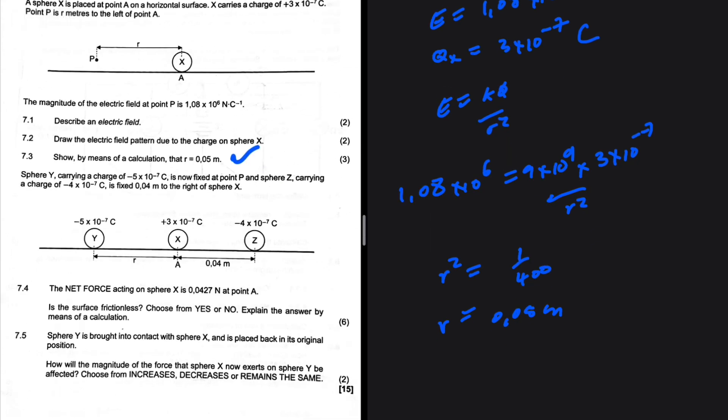Sphere Y carrying a charge of minus 5 times 10 to the minus 7 coulombs is now fixed at point P. And sphere Z carrying a charge of minus 4 times 10 to the minus 7 coulombs is 0.04 meters to the right of sphere X. 7.4: The net force acting on sphere X is 0.0427 newtons at point A. Is the surface frictionless? Choose from yes or no. Explain the answer by means of calculation.